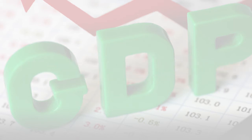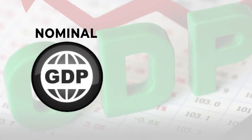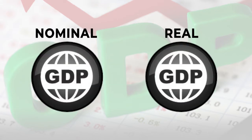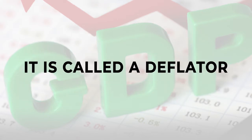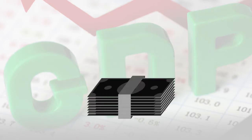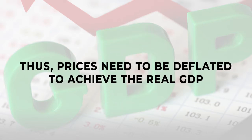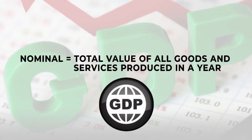The GDP deflator is the price index which can be used to convert nominal GDP into real GDP. It is called a deflator as it is used to deflate the prices to the base year level. Generally, prices increase with time, thus prices need to be deflated to achieve the real GDP.